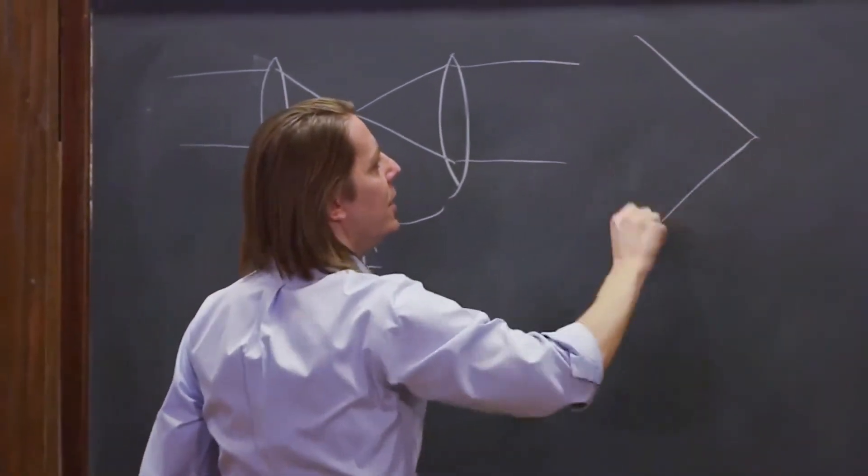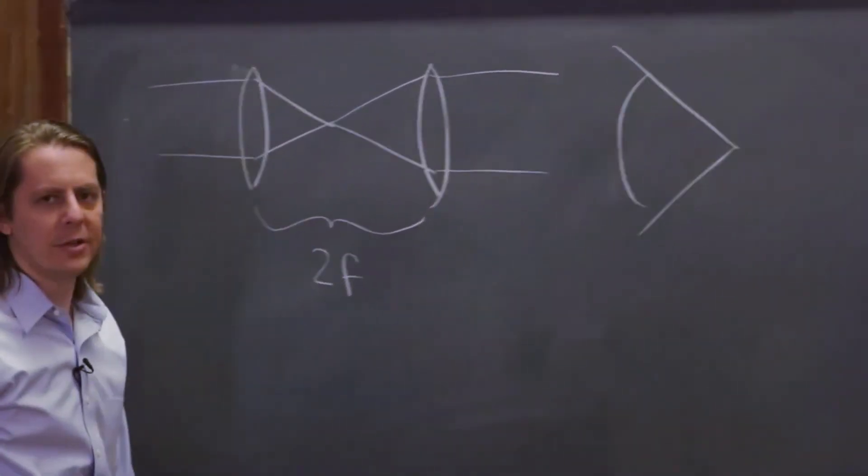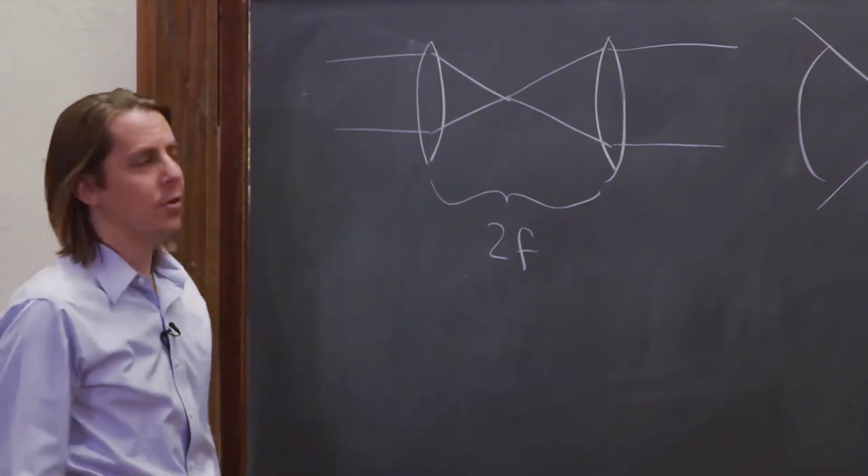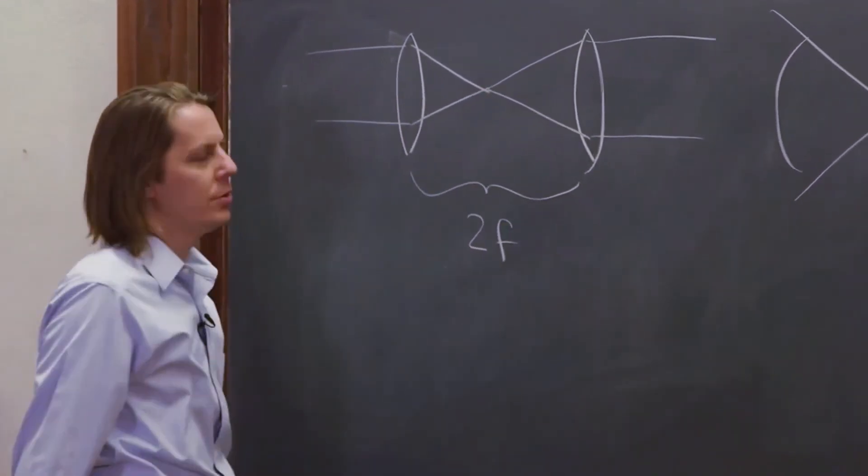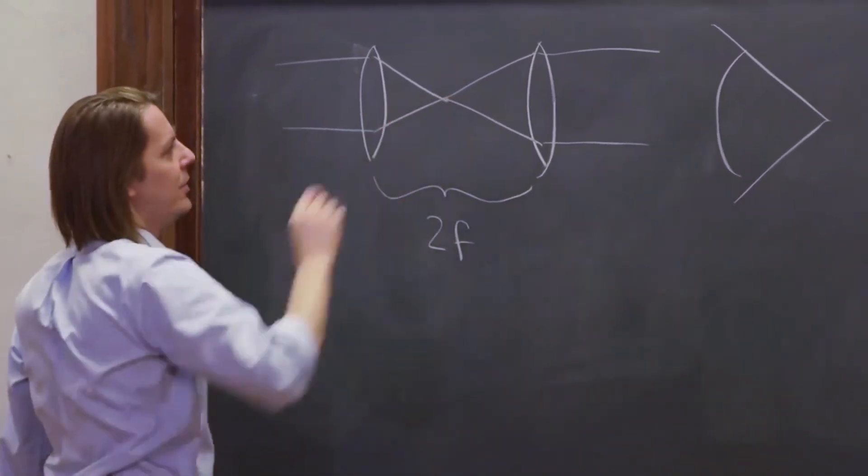If you put your eye right there and look into these lenses, you'll see the same rays you would see if the lenses weren't there, because the rays would look the same if they went straight or if they did this.